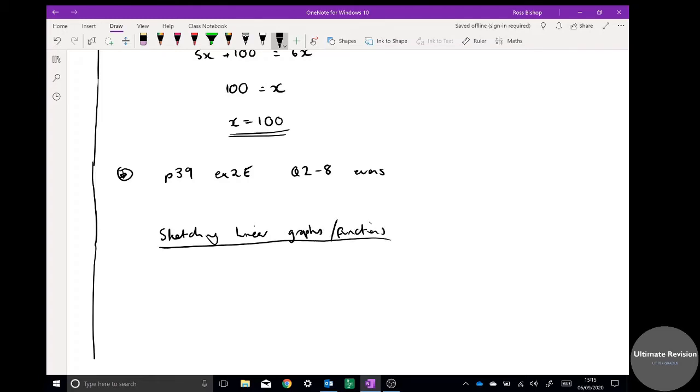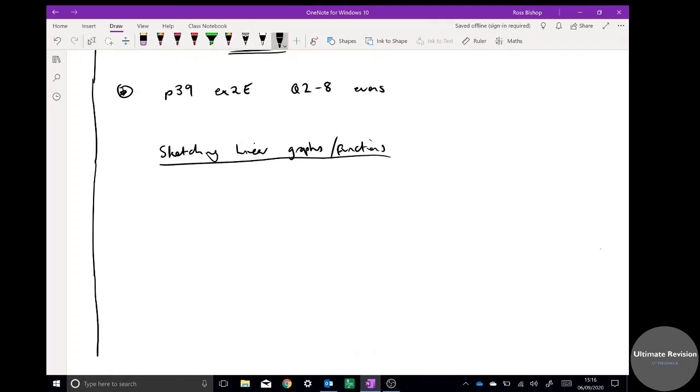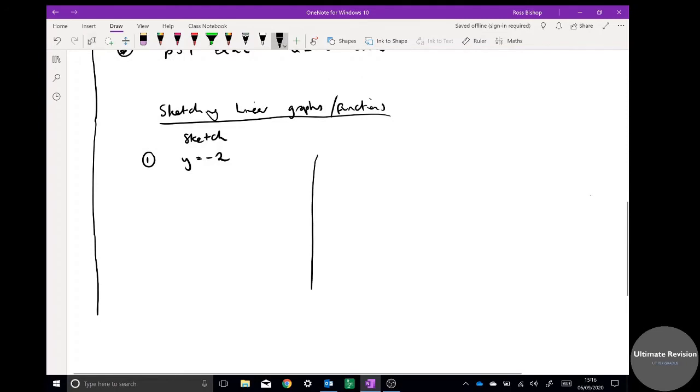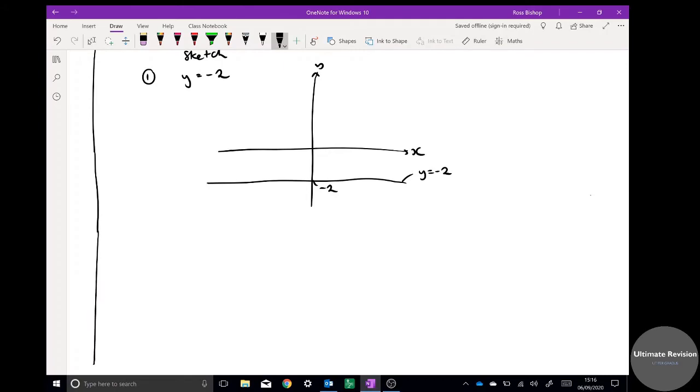This one here is sketching linear graphs or functions, means the same thing really. Sketching linear functions is a really crucial skill and I'm going to give you four examples here. Type 1: all of these just involve a sketch, so you don't need to do a big table of values and have it all to scale. This is just showing key information. The first one, you should be able to sketch y equals minus 2 or something like that. Y equals minus 2 means all the y coordinates are minus 2, so it is a horizontal line passing through y equals minus 2.